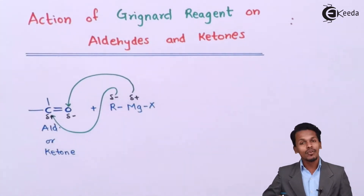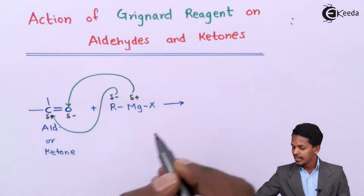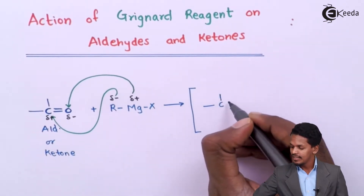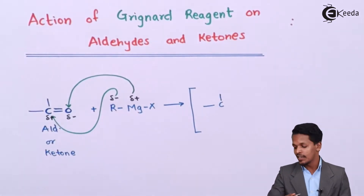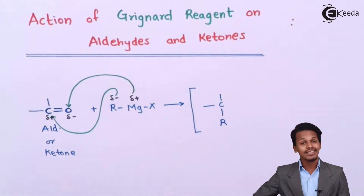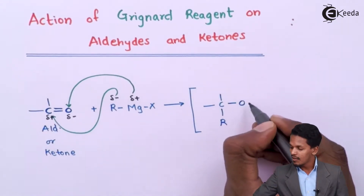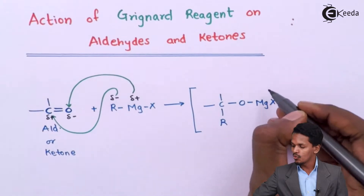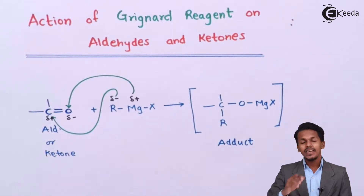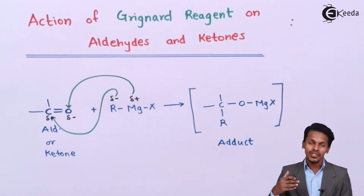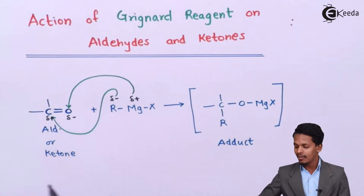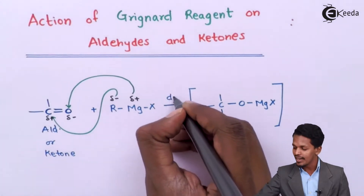The product formed is an adduct — an addition reaction takes place where the R group attaches to the carbon atom and the MgX group attaches to the oxygen atom. The conversion of an aldehyde or ketone to an adduct takes place in the presence of dry ether.